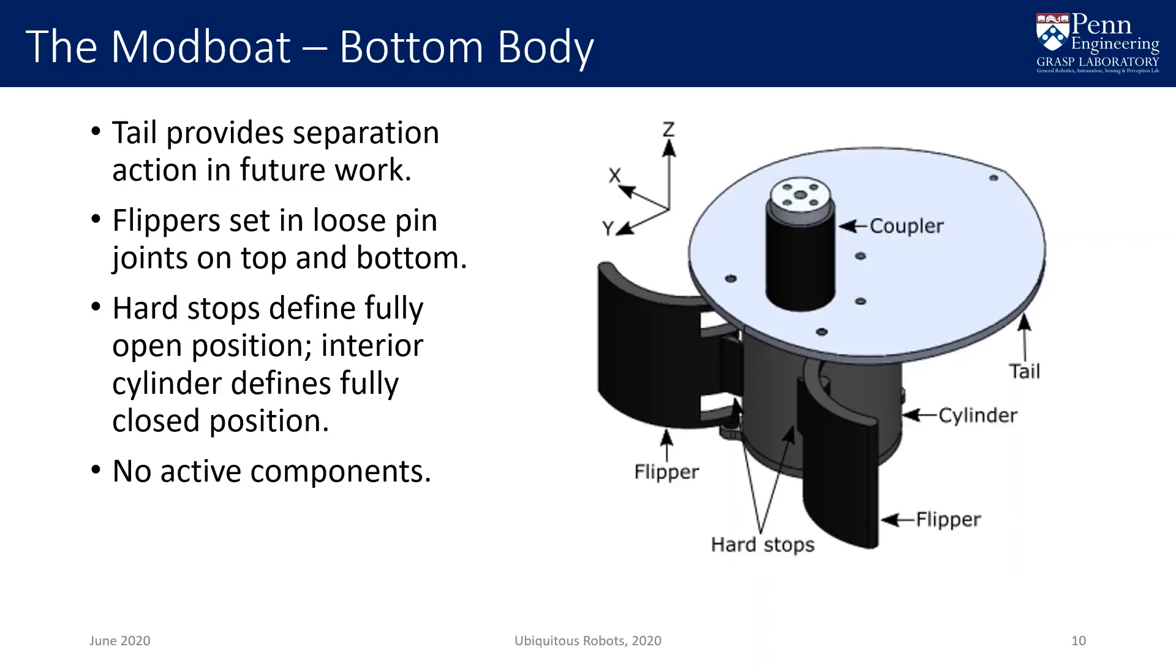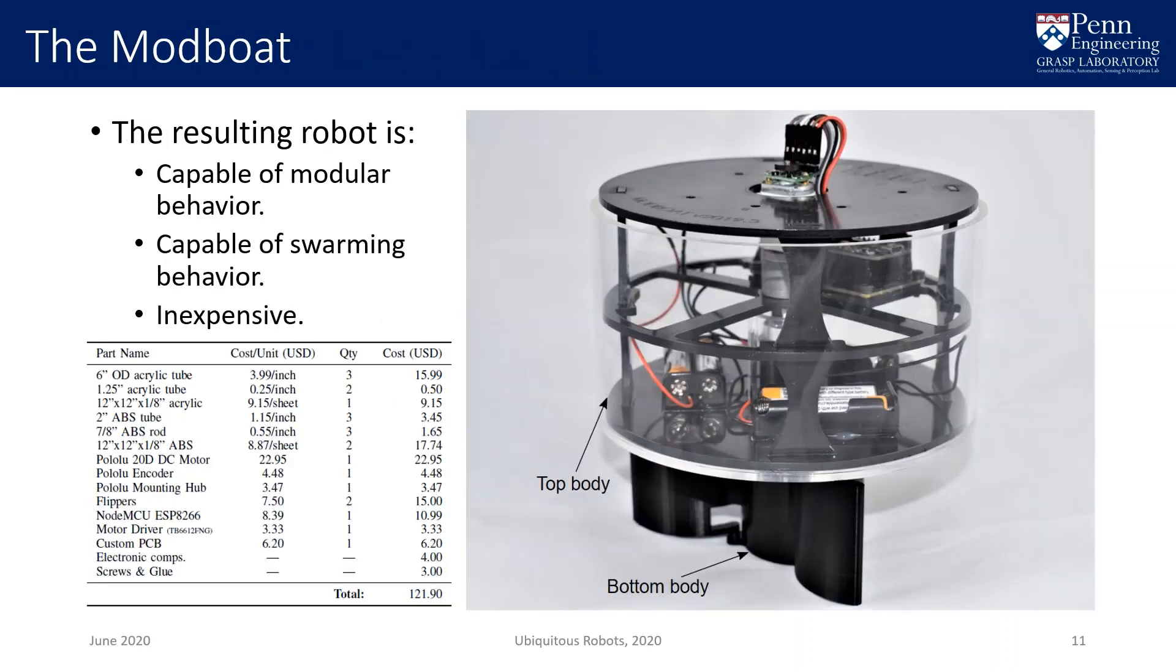The bottom body holds the passive propulsion components. The flippers are held in place by loose pin joints. Hard stops define the fully open position, and the cylinder defines the closed position. Note that, when closed, the flippers sit flush against the cylinder. The two bodies combine into a robot following the model developed by Rafael and Degani, but that is capable of modular self-assembly and swarming behavior. Although the design was not explicitly constructed with cost savings in mind, the result is quite affordable at around 120 US dollars, due to its inherent simplicity.